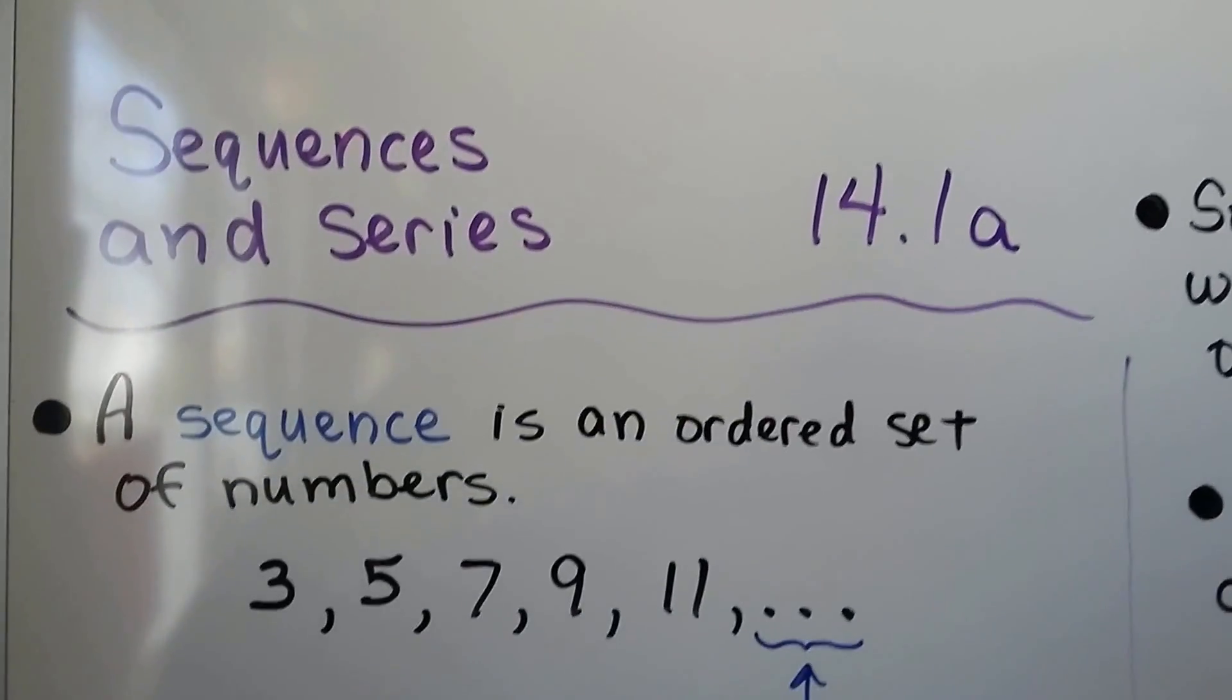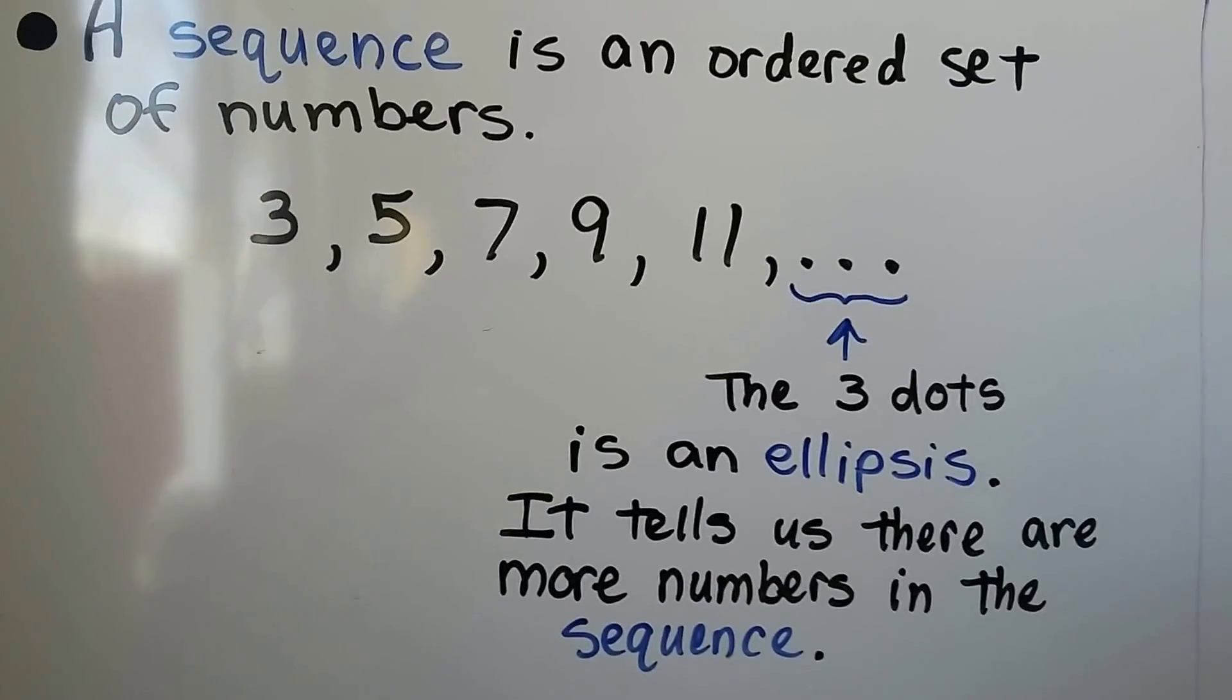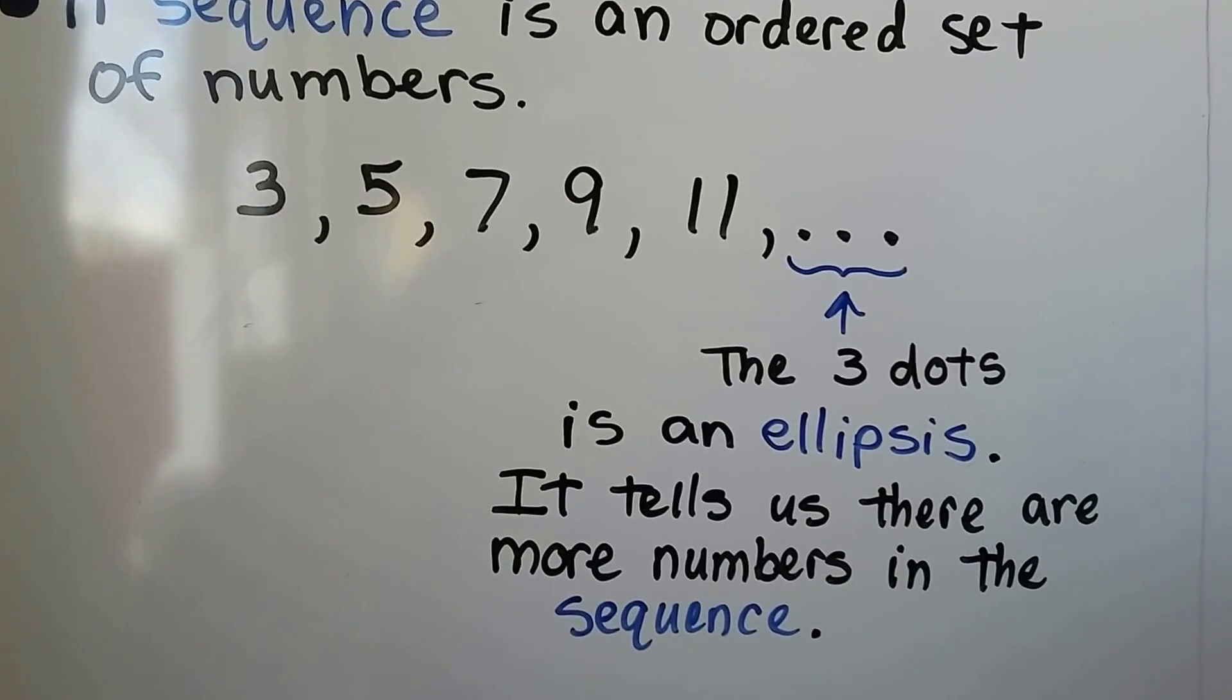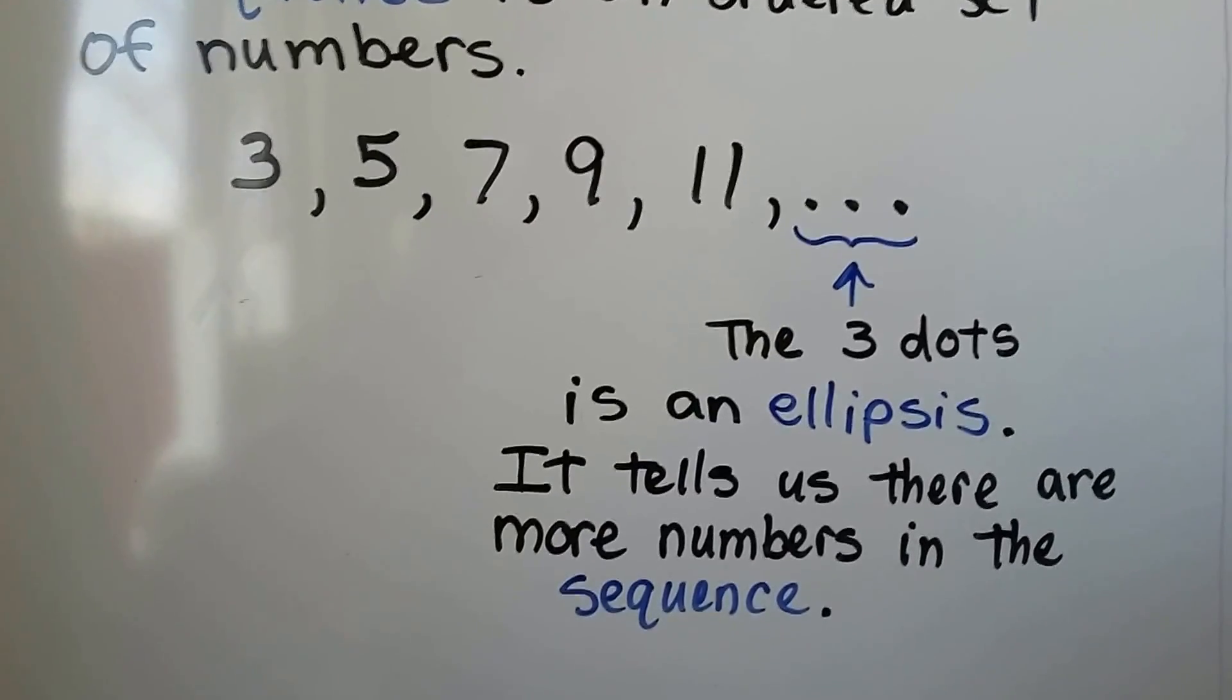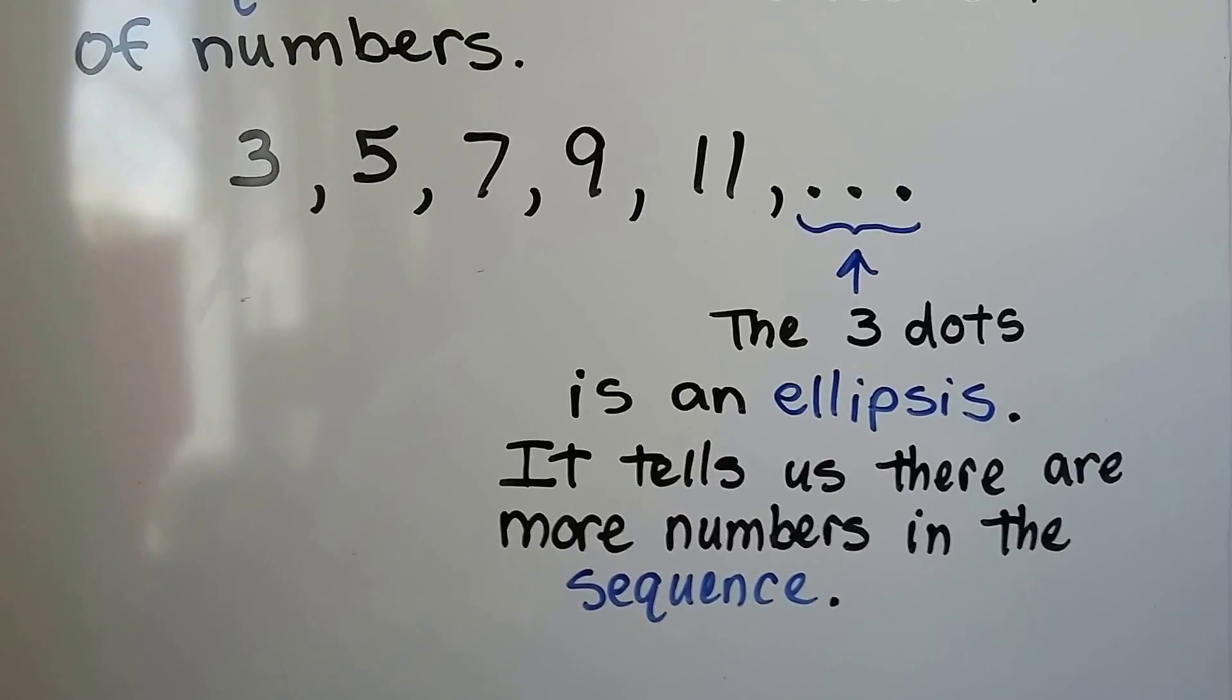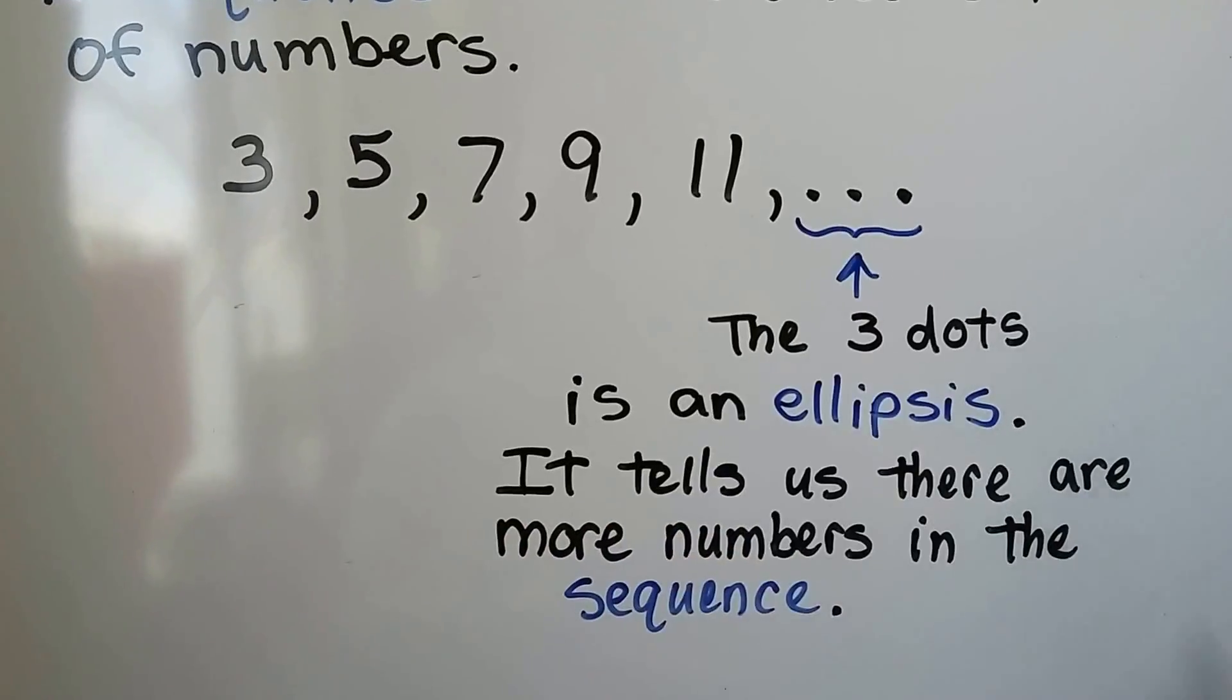A sequence is an ordered set of numbers: 3, 5, 7, 9, 11. Those three dots is an ellipsis, and it tells us there's more numbers in the sequence, so that's an and so on. You could probably look at this sequence and tell which number would come next. You can see the pattern here. It's going up by 2, isn't it?